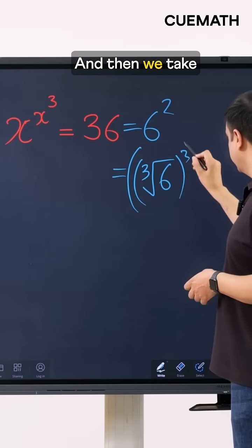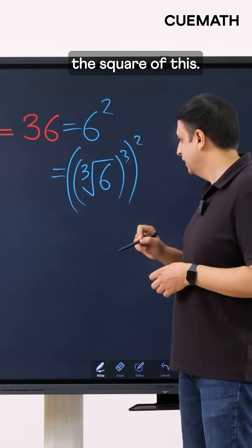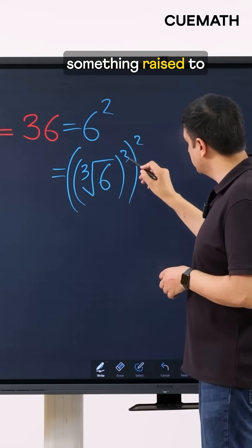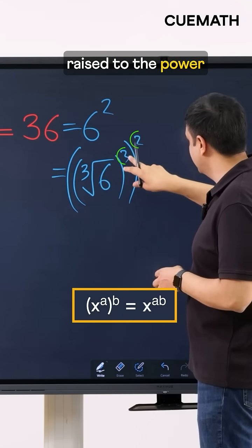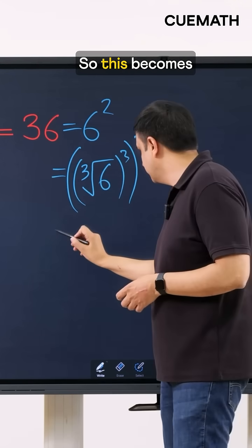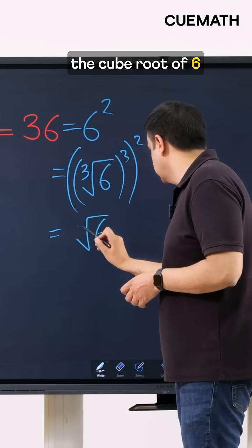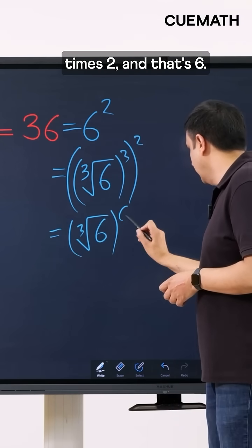So that's 6 and then we take the square of this. Okay so now we have something raised to the power 3 raised to the power 2. So using the laws of exponents this should be simply something raised to the power 3 times 2 or 6. So this becomes the cube root of 6 raised to the power 3 times 2 and that's 6.